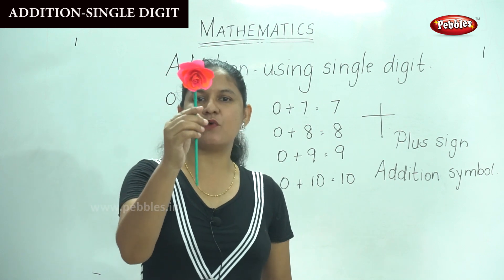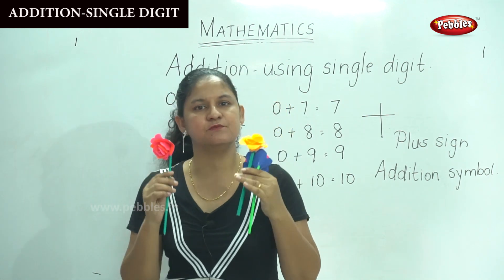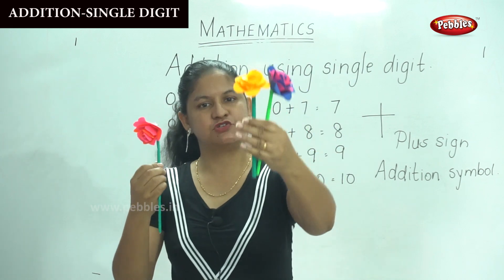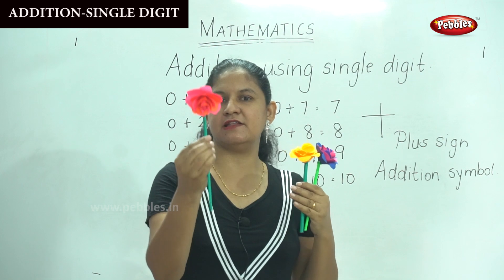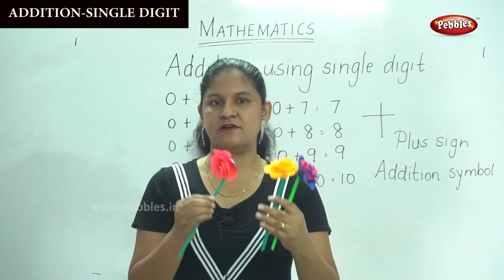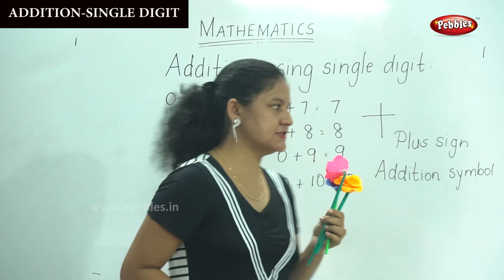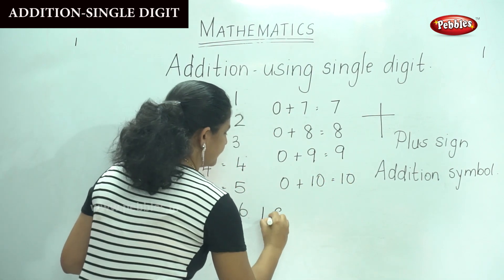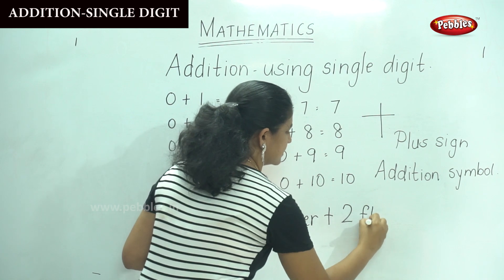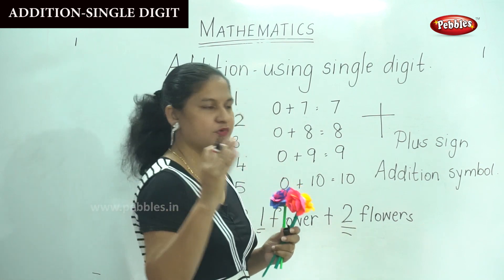In this hand I have just 1 single flower, and in this hand I am having 2 flowers. So I need to count how many flowers I have in both hands. Counting: 1, 2, and 3. So it is 1 plus 2 which gives us 3. So 1 flower plus 2 flowers gives me 3 flowers.